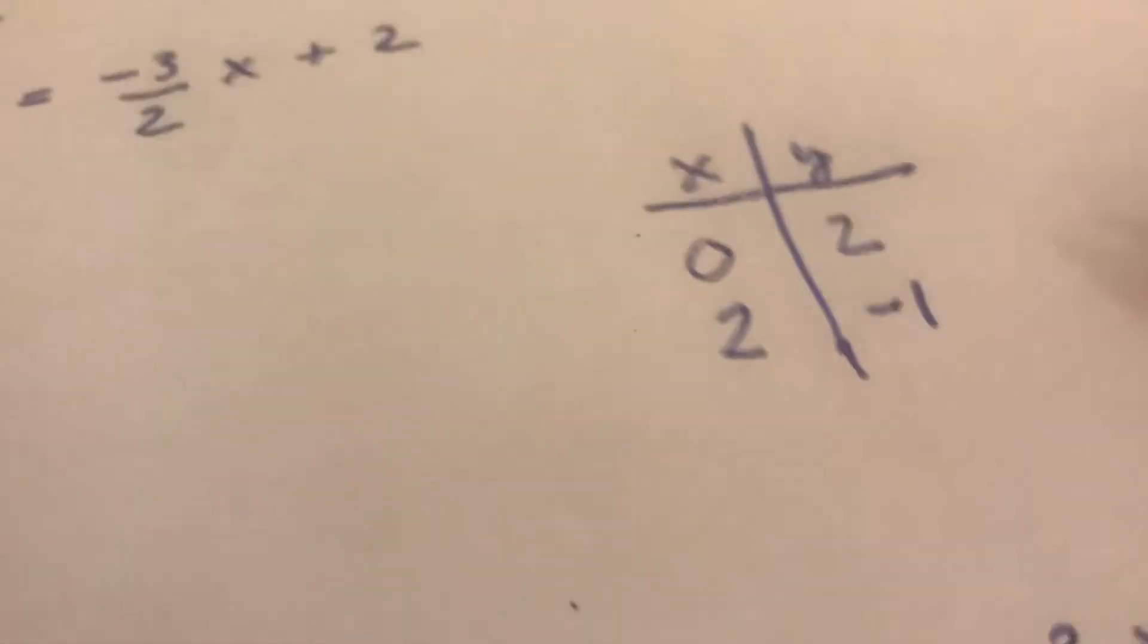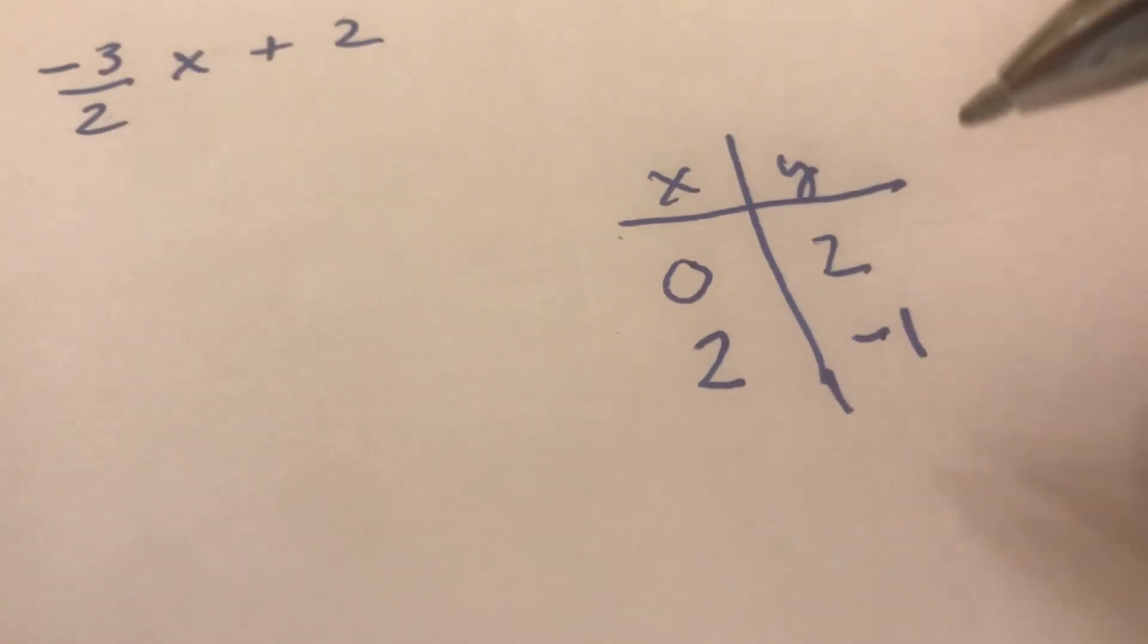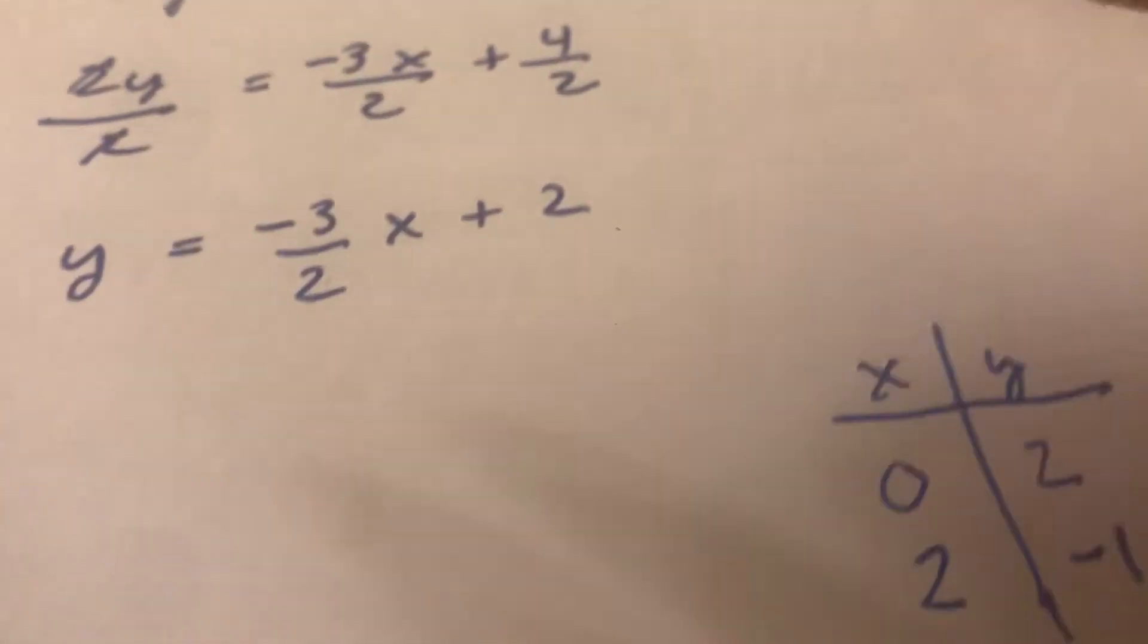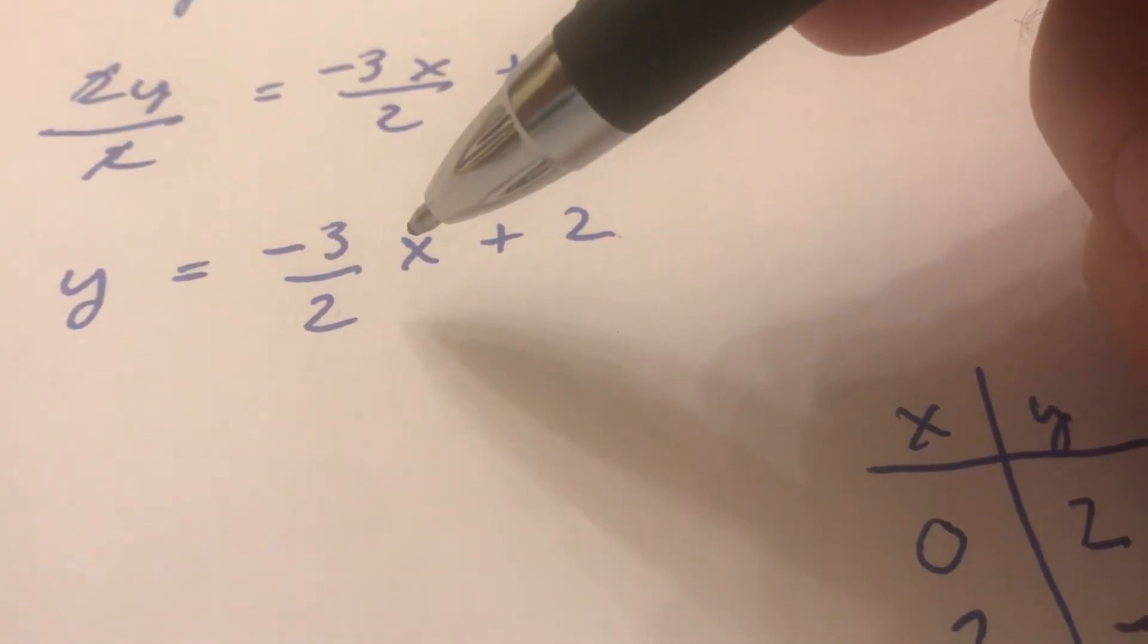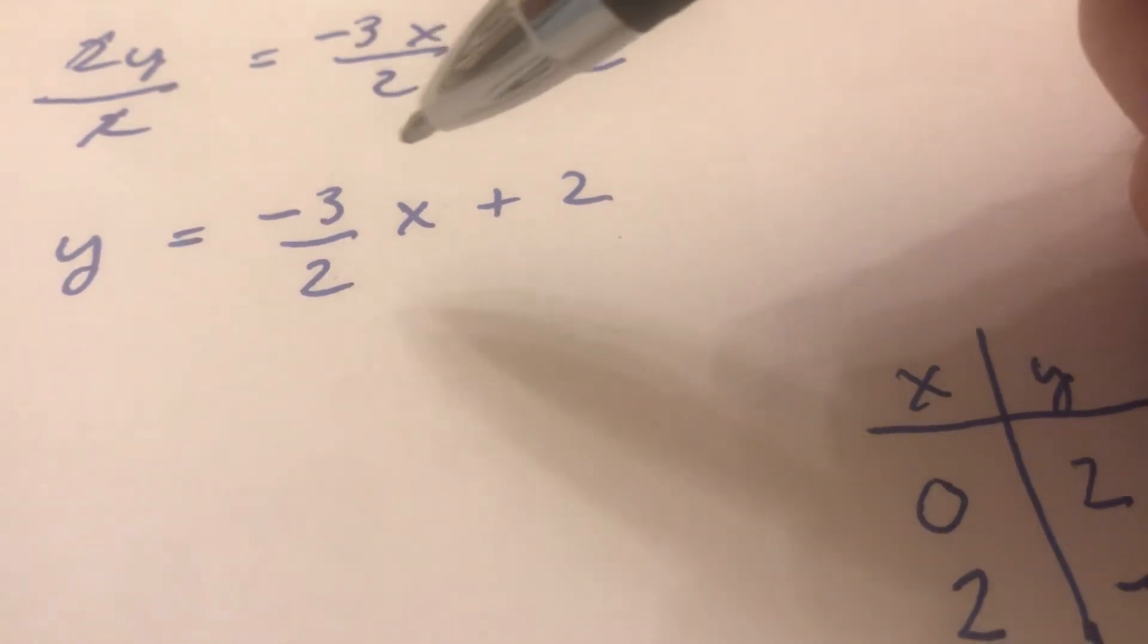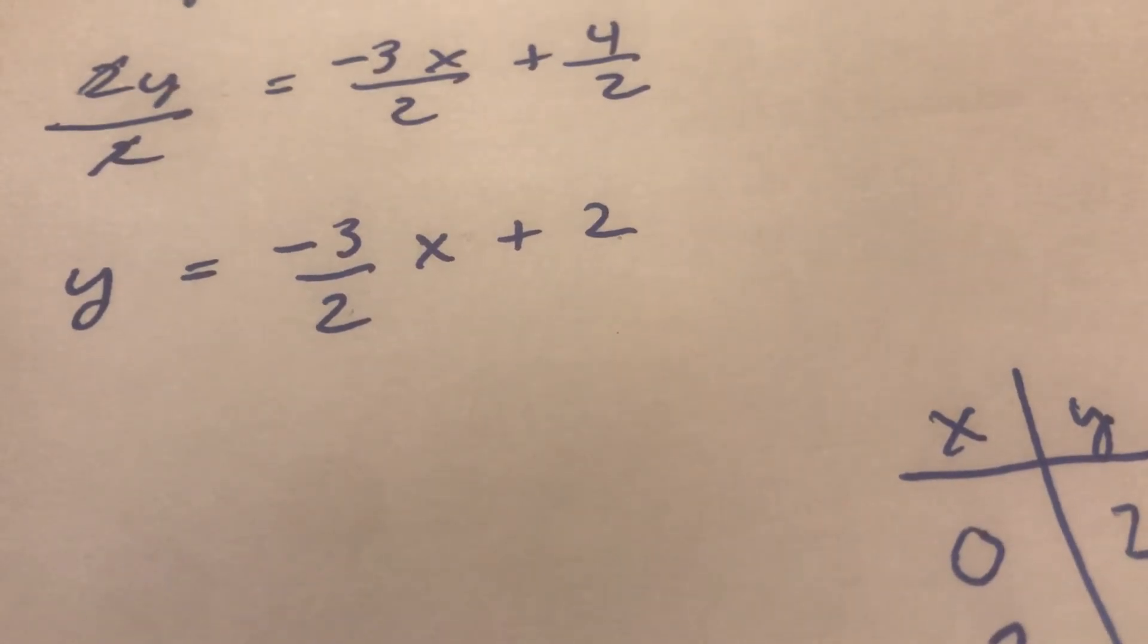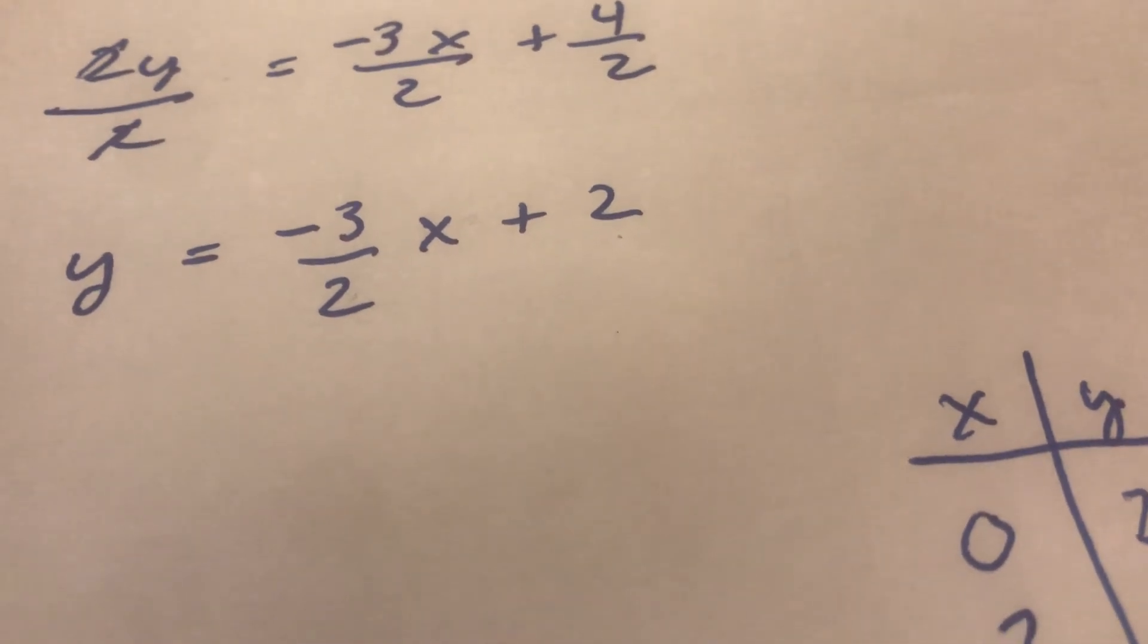And for this now I'm done - I could actually just graph that and it would give me my line. But sometimes it's good to do a third point just to make sure you have it right. So I'm gonna let x equal negative 2 for the same reason I let x equal 2. So negative 3 over 2 times negative 2. The 2's cancel and I'm left with negative 1. So I get negative 3 times negative 1 which is 3 plus 2. So that gives me 5. Negative 2, 5.